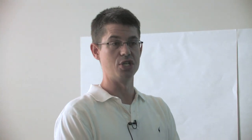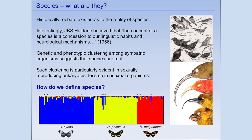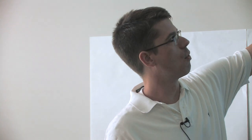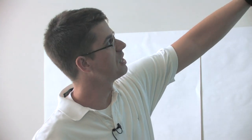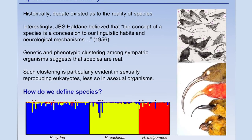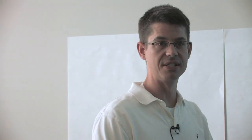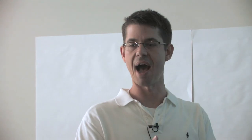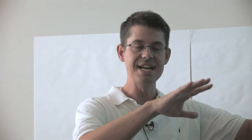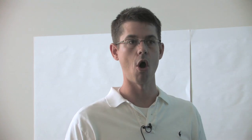First: species. What are species, and how do we define them? Historically there's been debate about whether species are even real things. There's the Latin-based nomenclature for calling different things different species. A fairly famous biologist, J.B.S. Haldane — a real famous population geneticist — believed that the concept of a species is a concession to our linguistic habits and neurological mechanisms. The idea is that as humans, our evolutionary history has programmed us to put things in boxes, so we may look out at nature and see continuous variation and just want to put it into categories.